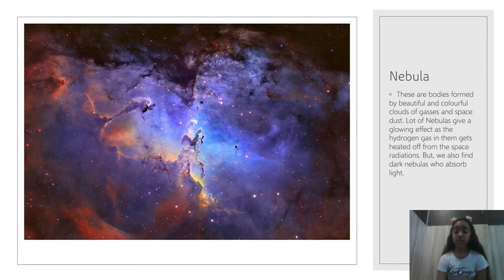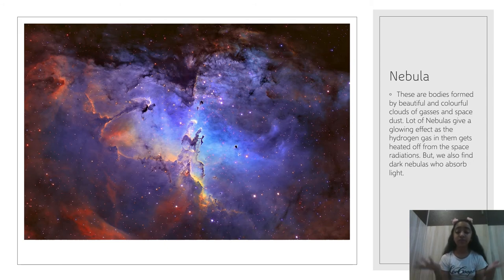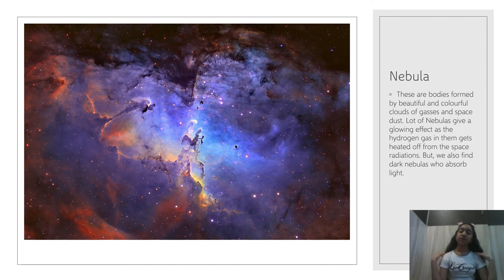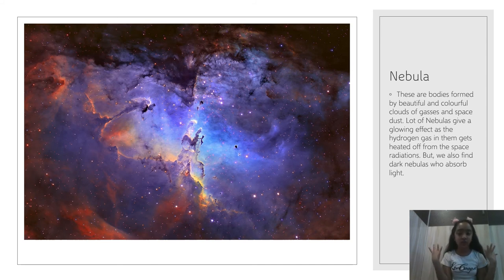Our next heavenly body in space is a nebula — this is my favorite thing in the universe. Nebulae are bodies formed by beautiful and colorful clouds of gases and space dust. A lot of nebulae give a glowing effect as the hydrogen gas in them gets heated from space. As you can see in this picture of a nebula, it looks so beautiful — like heaven, shining so brightly. We also found that there are dark nebulae which absorb light.